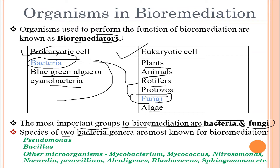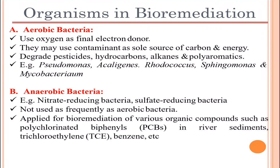The species of two bacterial genera most known for bioremediation are Pseudomonas and Bacillus, along with other microorganisms such as Mycobacterium, Micrococcus, and Nitrosomonas — the list goes on. These are some of the important genera or species of bacteria used in bioremediation.